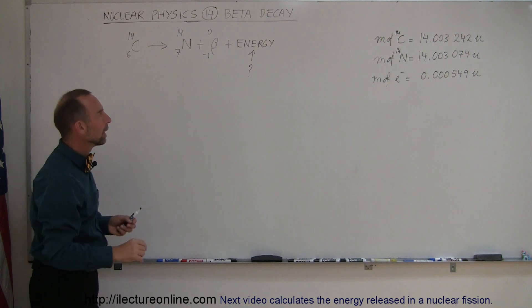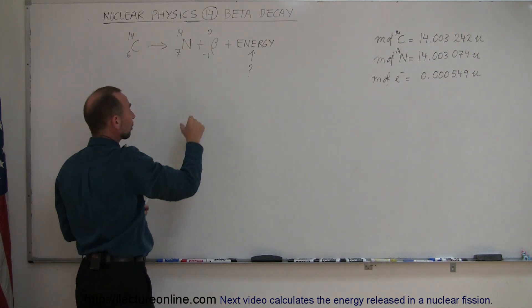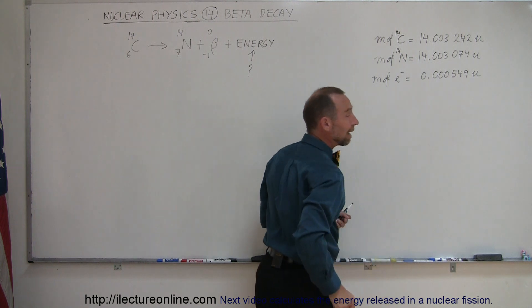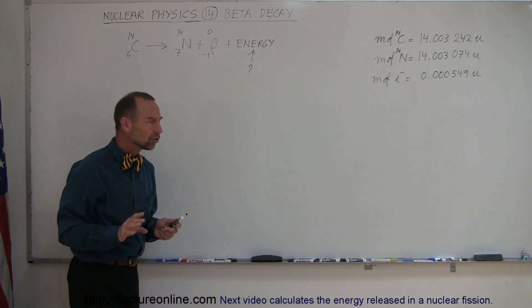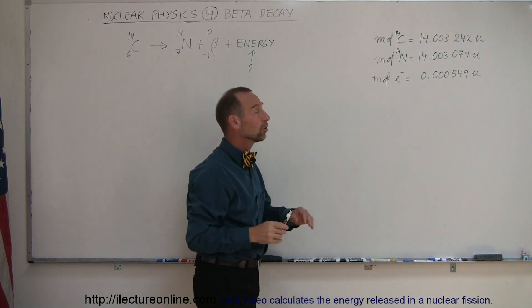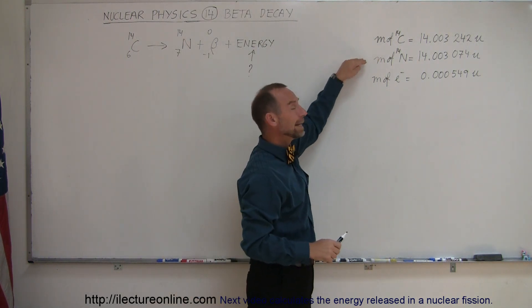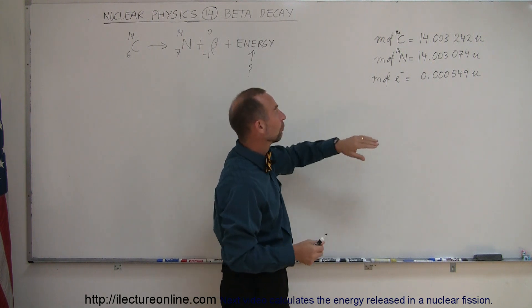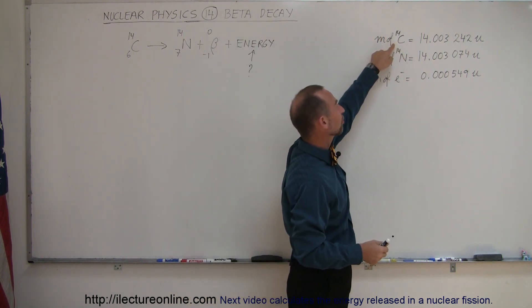But here we have to be a little bit careful because it does eject a beta particle, which is basically an electron, so do we have to take into account the mass of the electron? Actually, the way these numbers are set up, the answer is no, because these numbers here already include the electrons in the orbits around the nucleus.